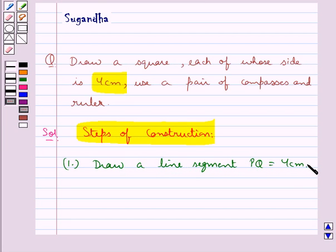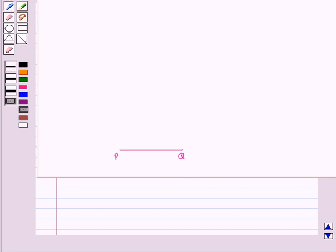Since we are given that the side of the square is of measure 4 cm, this is the line segment PQ which measures 4 cm. We have drawn one side of the square.